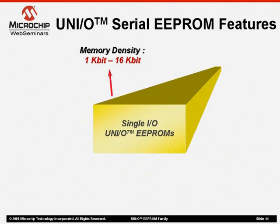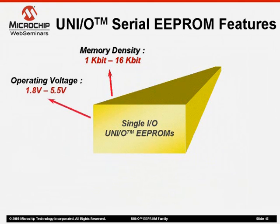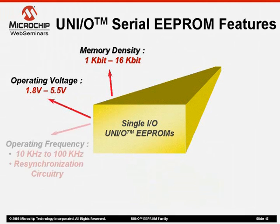Now let's talk about the UniO EEPROM features. The connection to a UniO device will only need a single I/O port for communication. Since there is not a limitation on the densities, we are first releasing the lower density 1K, 2K, 4K, 8K, and 16K bit devices. A wide voltage range from 1.8 volts to 5.5 volts over a frequency range from 10 kHz to 100 kHz will be supported. This includes the resynchronization circuitry that allows the UniO slave device to sync up in frequency and phase to any MCU master.